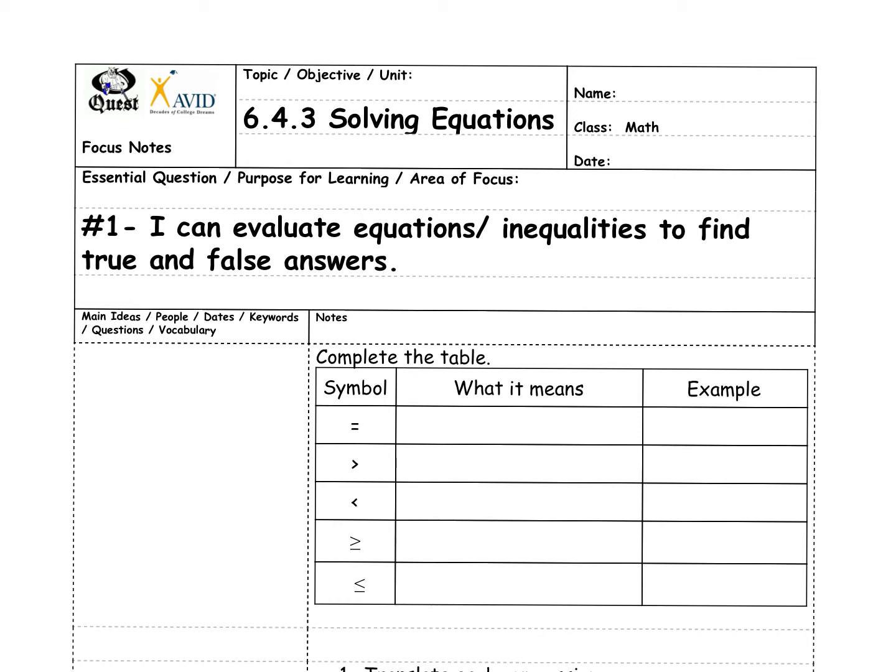The first symbol is obviously our equal sign. And that shows equality or when things are the same. So we could say 4 equals 4.